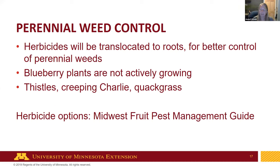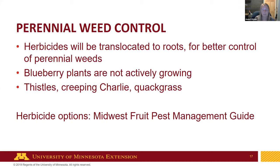Perennial weed control is a good time to address in blueberries in a few weeks. For weeds like thistles, creeping charlie, and quack grass — at the end of the season, perennial weeds are translocating carbon, sugars, and water down from foliage into roots. Spraying those with a broadleaf herbicide at this time means the herbicide will also be translocated down into roots, doing a better job of killing perennial weeds when applied late in the fall. Herbicide options for blueberries are available in the Midwest Fruit Pest Management Guide.